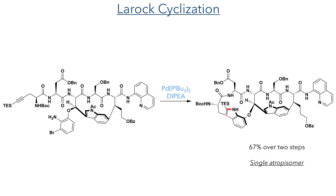With this in hand, they could then carry out the second macrocyclisation. This was performed using the same conditions as before and produced the macrocycle in a 67% yield, again as a single atropisomer.